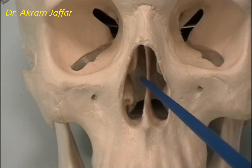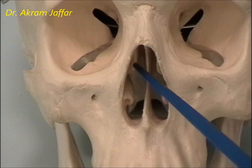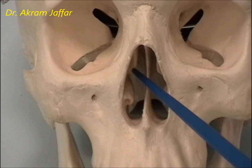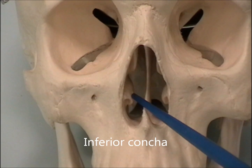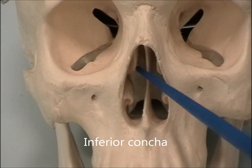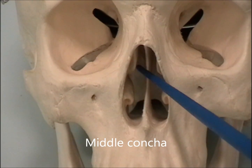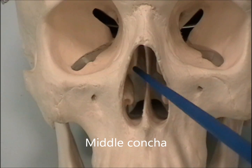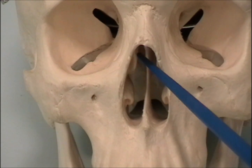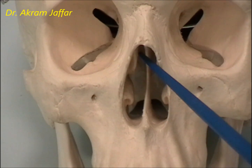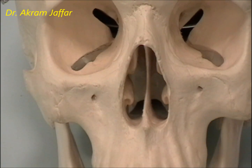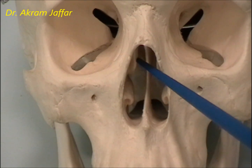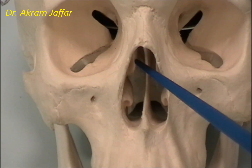On the lateral wall of the nose, you can see that there are two ridges or shelves. These are the middle concha and the inferior concha. The inferior concha is a separate bone by itself, while the middle concha is part of the ethmoid bone. The superior concha is also located, but it cannot be seen in this view because the superior concha fuses with the middle concha anteriorly, so they cannot be separated from each other anteriorly. The middle concha and superior concha are part of the ethmoid bone.